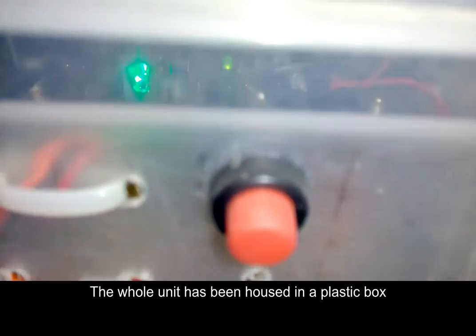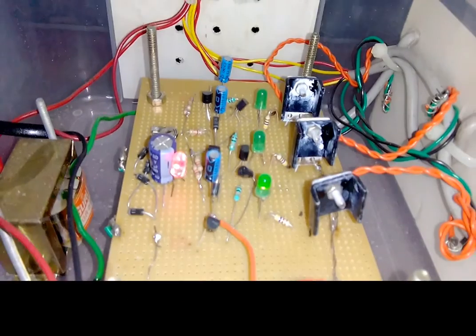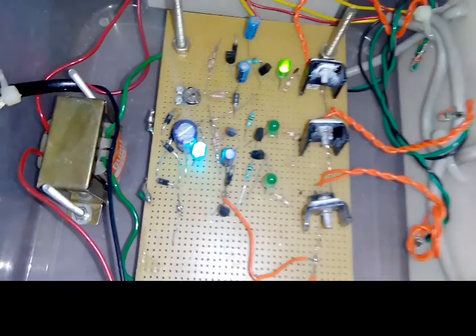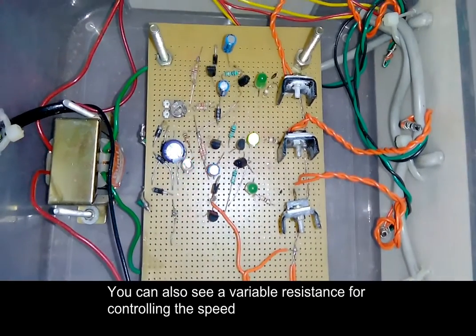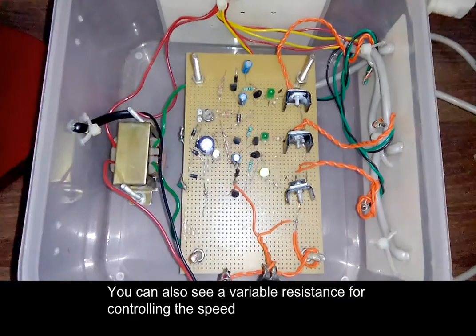The whole unit has been housed in a plastic box. You can also see a variable resistance for controlling the speed.